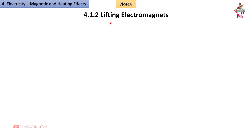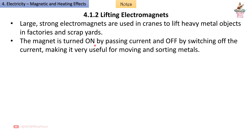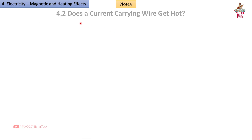4.1.2 Lifting Electromagnets: Large, strong electromagnets are used in cranes to lift heavy metal objects in factories and scrap yards. The magnet is turned on by passing current and turned off by switching off the current, making it very useful for moving and sorting metals.